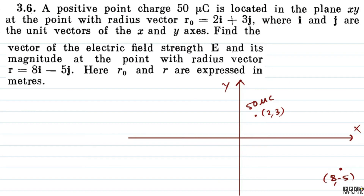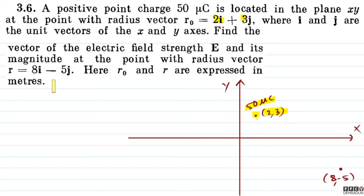So let's see what we have given in this question. A positive point charge is 50 micro coulomb and it is located in the xy plane, and its coordinates we can understand as (2, 3). We need to find the electric field strength and its magnitude at the point whose radius vector is 8i cap minus 5j cap, meaning its coordinate is (8, -5).